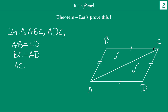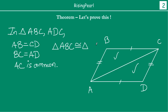Side AC is common to both triangles. So in both triangles, all the corresponding sides are equal: AB equals CD, BC equals AD, and AC is common. So if this is true, we can say that triangle ACB is congruent to triangle ACD, by the SSS rule. We just want to make sure that we write the corresponding sides correctly.